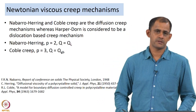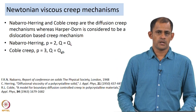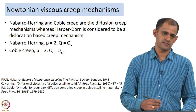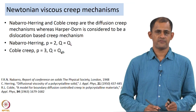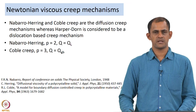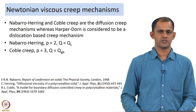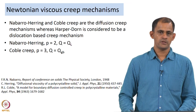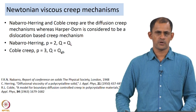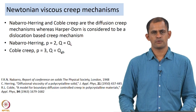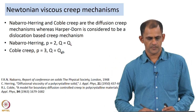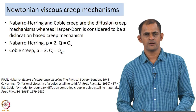First let us talk about Nabarro-Herring and Coble creep. Between Nabarro-Herring, Coble, and Harper-Dawn there are some subtle differences, but the main difference is that Nabarro-Herring and Coble creep are known as diffusion creep mechanisms — creep deformation controlled by the diffusion of vacancies — whereas Harper-Dawn is considered to be a dislocation-based creep mechanism.